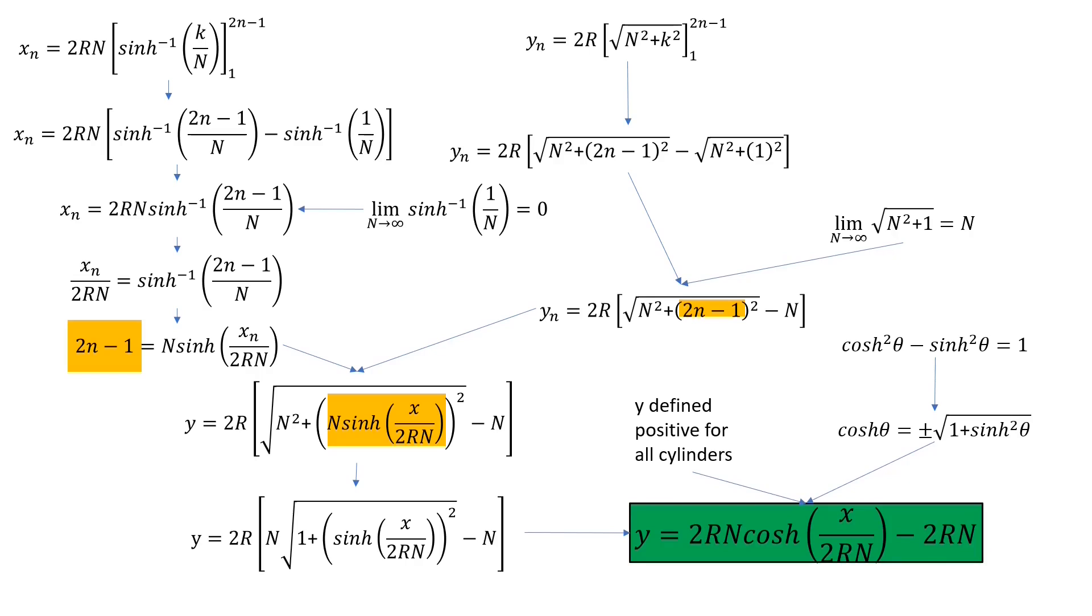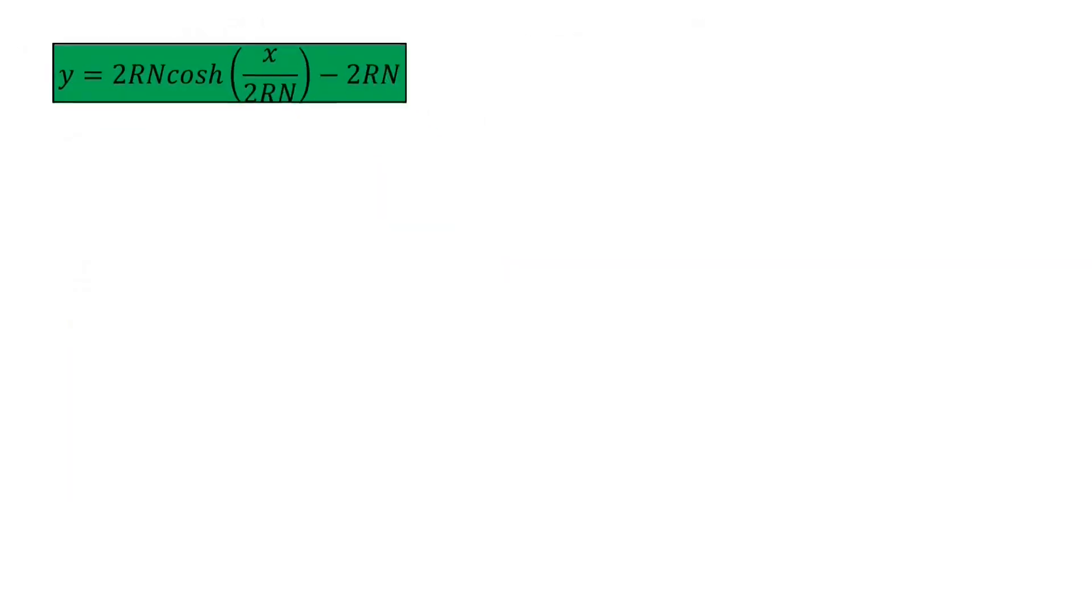And now Y is in the form of a catenary in the small angle limit for an arch of cylinders. So the constant of this result is 2RN, which is approximately the half length of the arch which it approaches in the small angle limit.